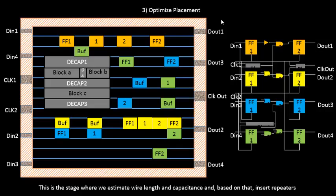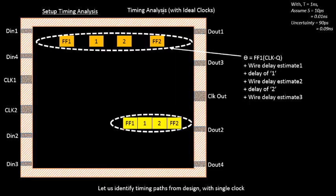That was the optimized placement — the first level of optimization done on the netlist and placement. It is also a very good step to perform a timing analysis — specifically an ideal clock timing analysis — of the existing placement, which gives an idea of what the timing is going to look like. This section needs a bit more discussion, so we'll cover it in the next video.